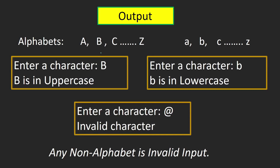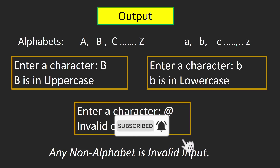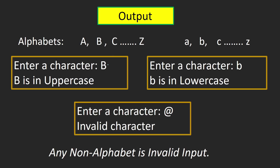Let's understand the question. In English we have capital A to capital Z and small a to small z, and only alphabets can be said to be in uppercase or lowercase. All capital letters are in uppercase and all small alphabets are in lowercase. So if we enter capital B, our output should be 'B is in uppercase', and if we enter small b, the output should be 'B is in lowercase'.